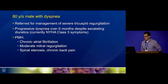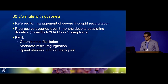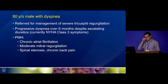An 80-year-old man with dyspnea was referred for management of severe tricuspid regurgitation, with progressive dyspnea over six months despite escalating doses of diuretics, currently NYHA class 3. Past medical history includes chronic atrial fibrillation, moderate mitral regurgitation, spinal stenosis, and chronic back pain which limited his mobility to a degree.